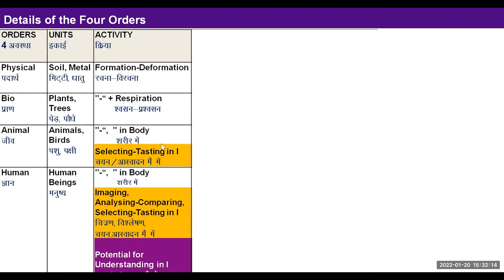In the bio order there is activity of formation and deformation, along with the activity of respiration — inhaling and exhaling. The bio order has the activity of the physical order; in addition it has respiration. Plants and trees have respiration, and a plant continues to be in the bio order so long as respiration is there. When respiration stops it goes back to the physical order — even the dried bark or dry leaves of a tree go back to the physical order when respiration stops. So a unit is in the bio order so long as respiration is there.